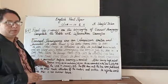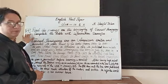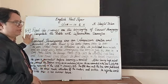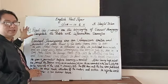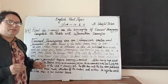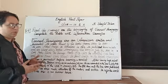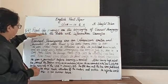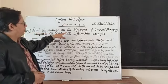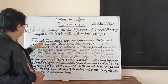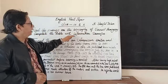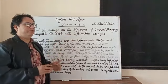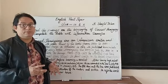First of all, you have to read the instruction on what to do. This is question number four; the first three questions are from the same passage so we are not conducting those today. Question number four is unseen, and sometimes students feel a bit difficult to solve these problems. We are going to see the instruction: with the passage on the biography of Ernest Hemingway, complete the table with information transfer. This is an information transfer activity, which sometimes feels a bit difficult.